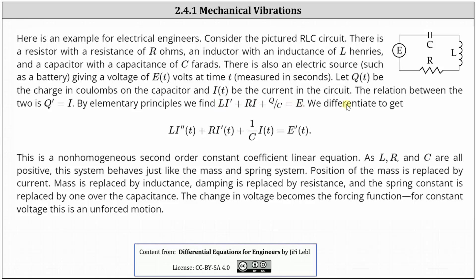If we differentiate both sides of the equation with respect to t, we have Li'' + Ri' + (1/C)i(t). This is because, remember, q' is equal to i, and this is equal to E'(t).